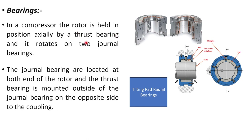Now let us see the various bearings in the compressor. Shown here is the radial bearing, which is a tilting pad type. These are the tilting pads, and these are the two halves of the bearing assembly. This is the complete assembly of the bearing, showing both the side view and front view.